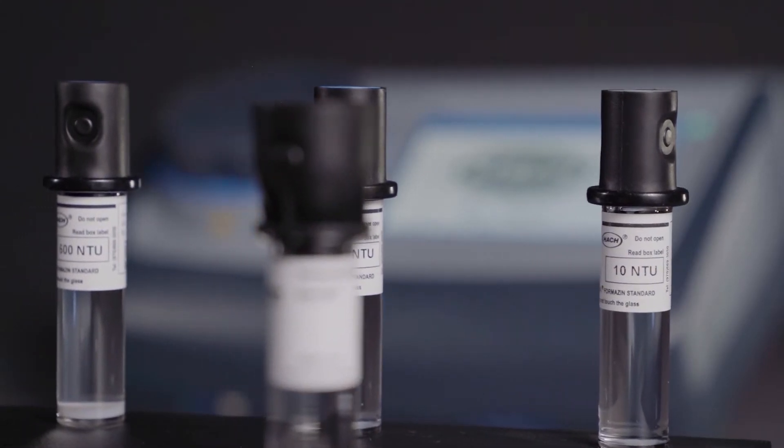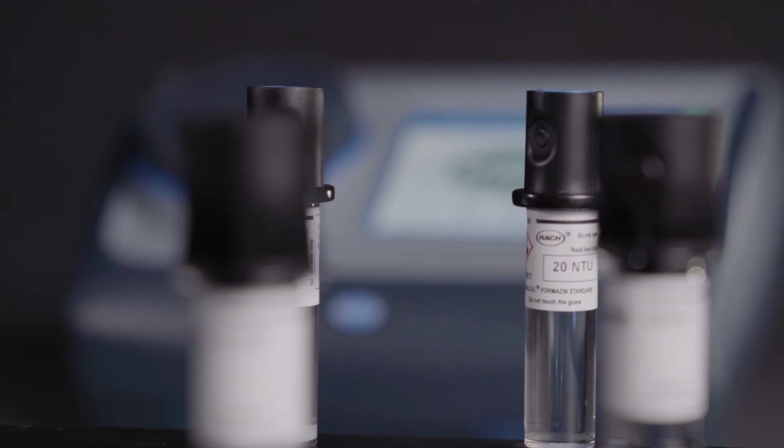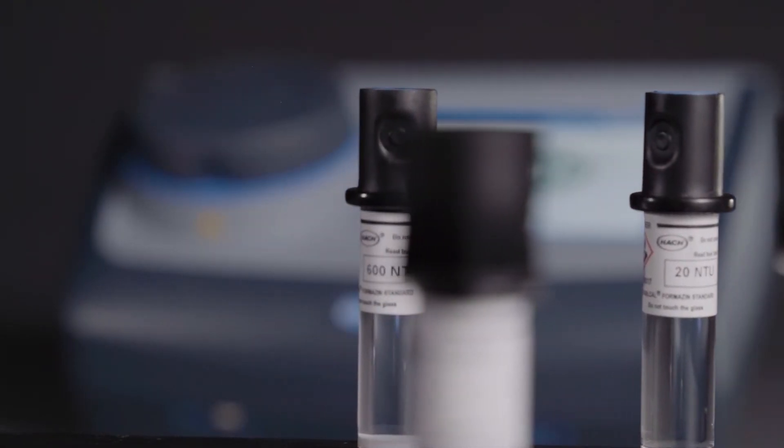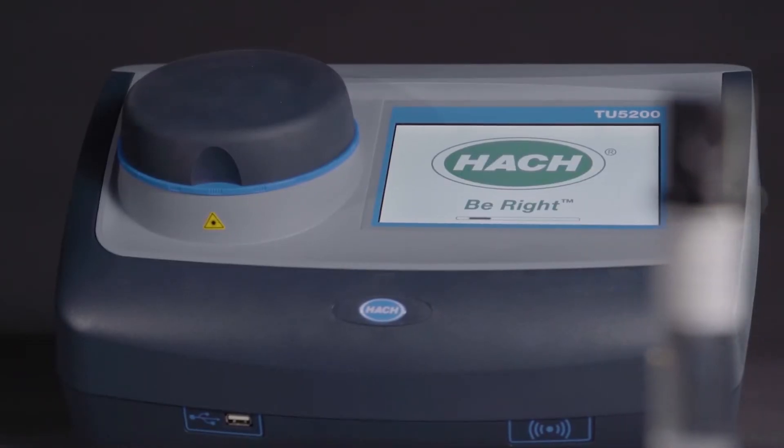TU5 is faster. It's faster to respond to changes in turbidity because of the lower volume of the sample. It's faster for you to calibrate and to clean. It's faster for you to bring confidence in the results that you're producing.